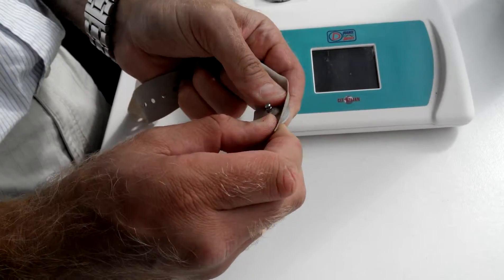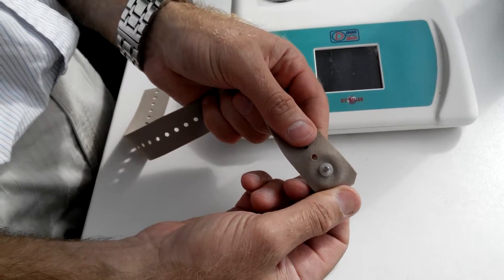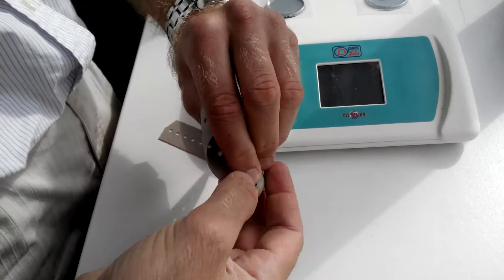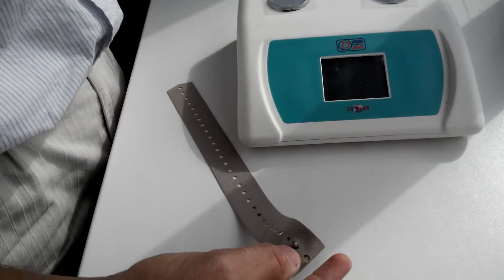Then we roll the elastic ribbon around the finger and use one of the holes to fix it on the finger.